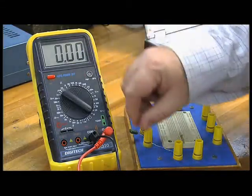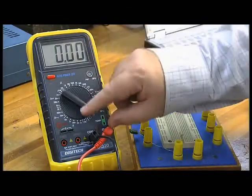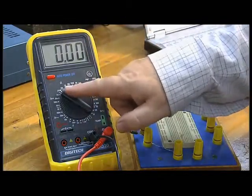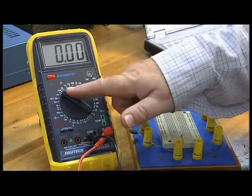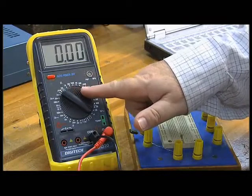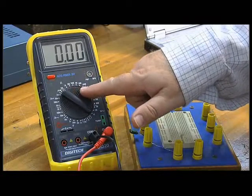Now the multimeter comes with a scale. If we look up here we can see this ohm or omega symbol which stands for ohms. So the resistance scale goes from 200 ohms all the way up to 200 mega ohms. The M stands for mega.